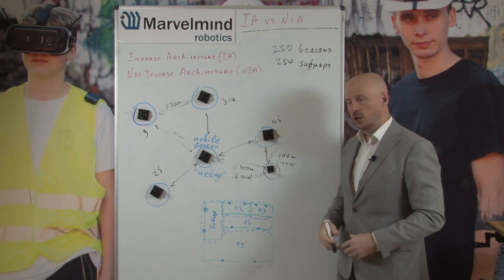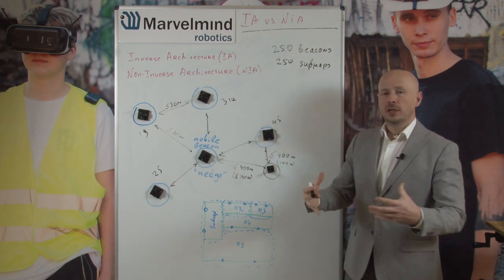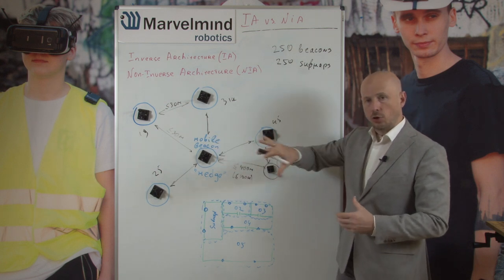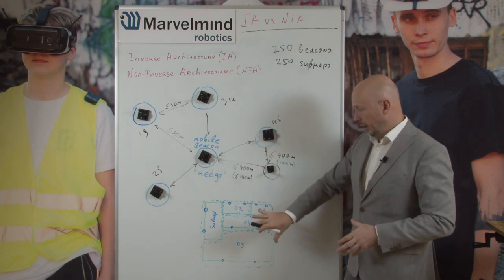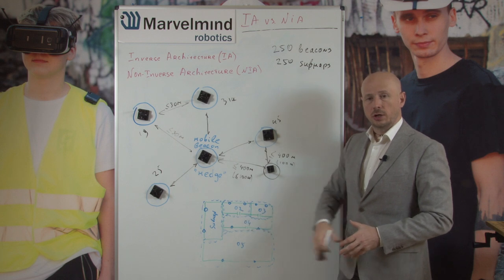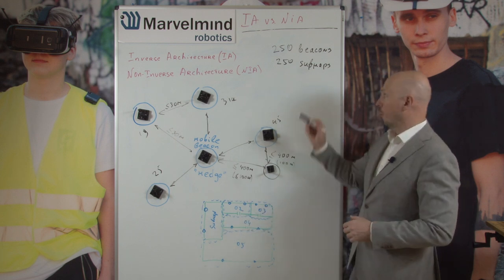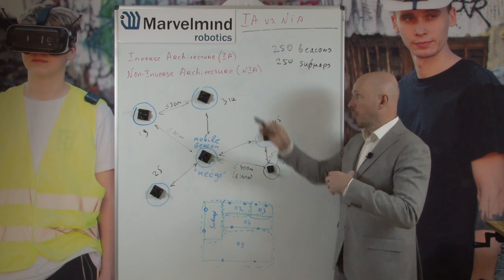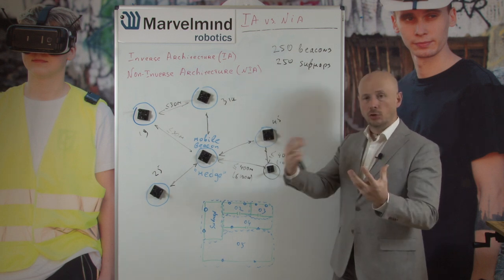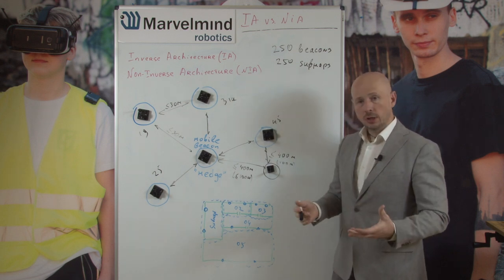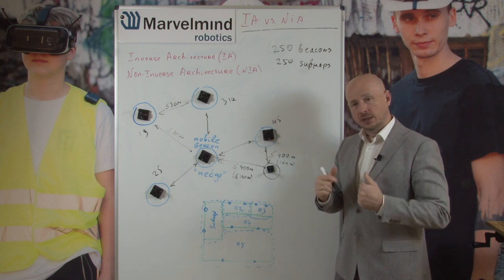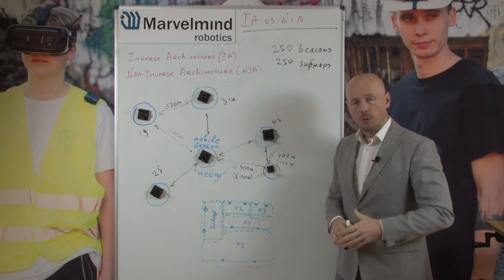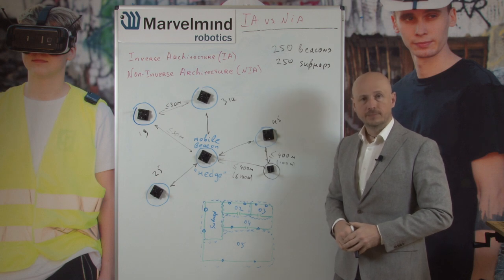Overall, capacity and capabilities are the same — you can build maps with up to 250 sub-maps in both inverse and non-inverse architecture. There is a fundamental difference in ultrasonic operation, but the scale is equivalent. If you have additional questions, send us an email at info@marvelmind.com and we will be happy to help. Thank you.